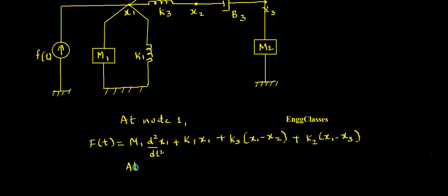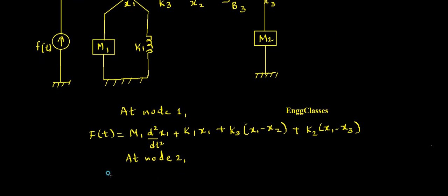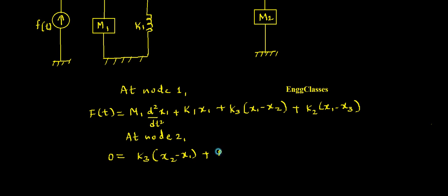Similarly at the second node x2, there are no independent elements. There is k3 between x2 and x1, and there is b3 between x2 and x3. So the equation is: 0 = k3·(x2 - x1) + b3·(d/dt)(x2 - x3). This is equation number 2.